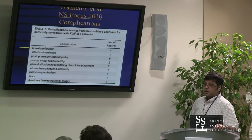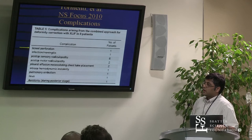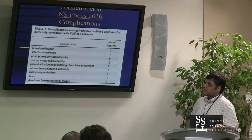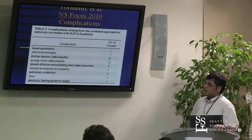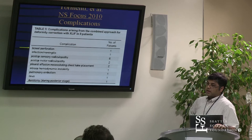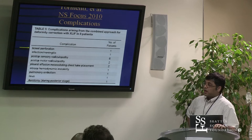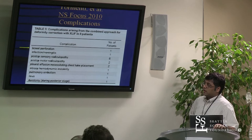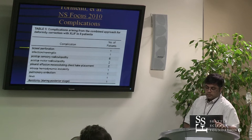Did anybody see Bob Heary's case report in JNS this year on a lateral approach that had bilateral iliac injury? It was a case with mild rotational deformity, done in an outpatient setting — a one-level lateral case — and they unfortunately put the retractor through both iliac veins, couldn't stop the bleeding, couldn't take the retractor out, wrapped the patient in ioban and shipped them in the lateral position to UMD where Bob tried to repair both iliac veins. The patient survived that operation but ultimately passed away six or eight weeks later from complications.